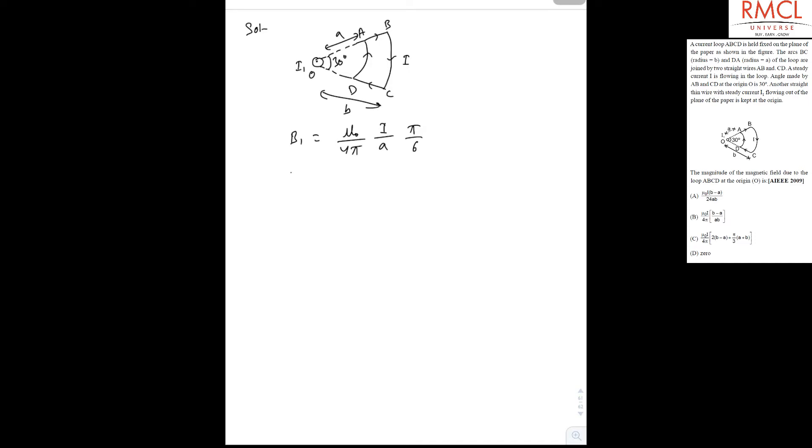And due to arc BC, it will be B2 equal to mu0 upon 4 pi, I upon B, pi by 6.